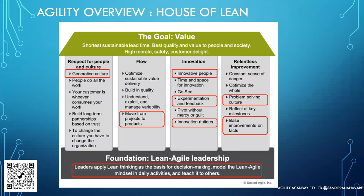Innovation and relentless improvement go hand in hand. Kaizen is a principle that talks about having improvement as part of the culture — thinking that every day when we work we want to deliver things better. At the foundation is leadership. Lean thinking says that unless you have leaders on board, no change can be sustained. Unless leaders have the right mindset, it becomes highly difficult to sustain any change. That is the House of Lean — lean thinking is one key aspect of agility, which encompasses lean as well as agile.